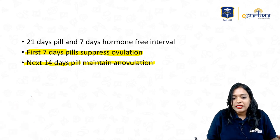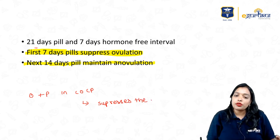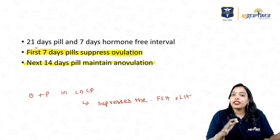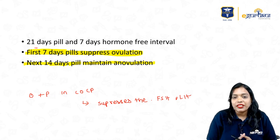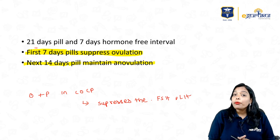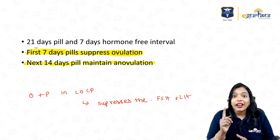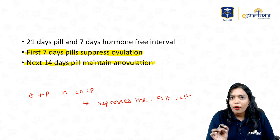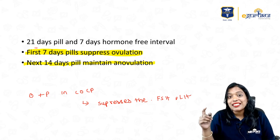The estrogen and progesterone in combined oral contraceptive pills suppress FSH and LH. Estrogen causes negative feedback on FSH and LH; progesterone causes negative feedback on LH. So as there is no FSH and LH, there won't be recruitment of the follicle and there won't be selection of the dominant follicle. This is what happens in the first 7 days, which is why first 7 days pills are very important. If somebody misses their pill in the first 7 days, it is more dangerous compared to missing the pill in the second or third week.